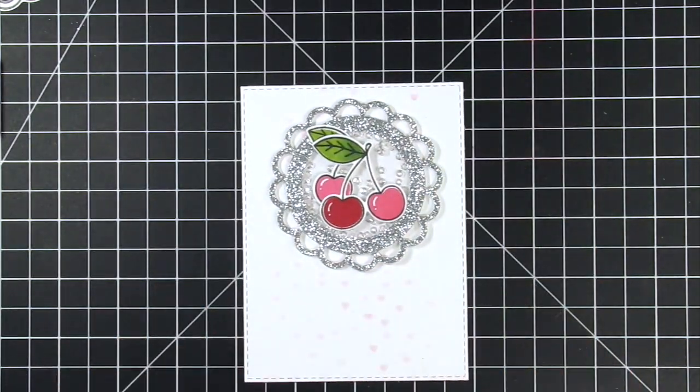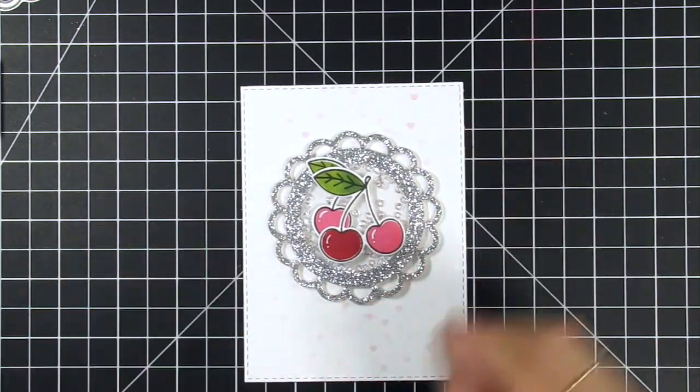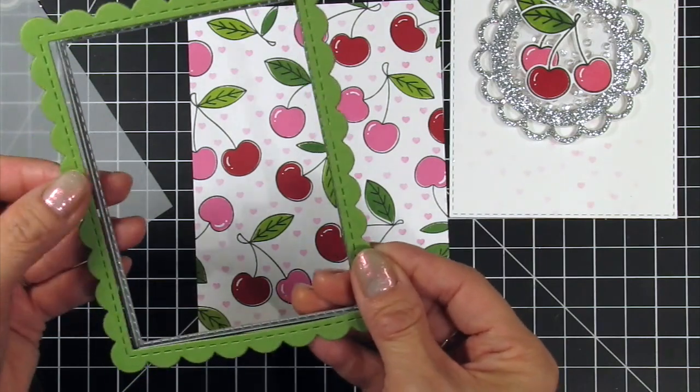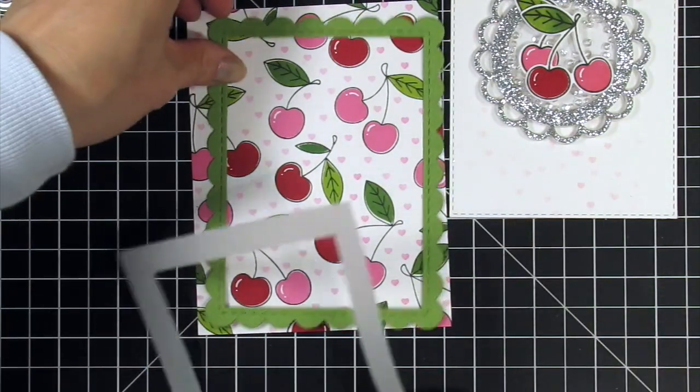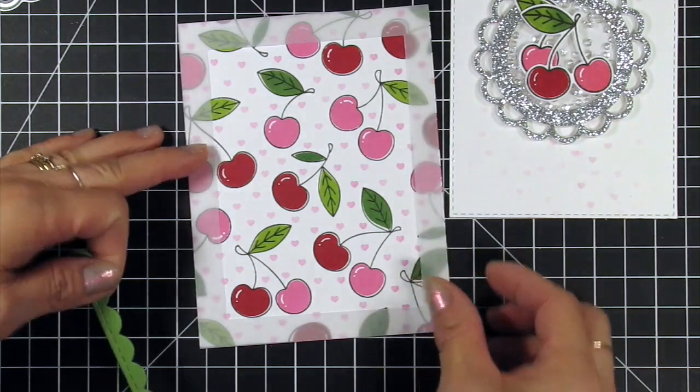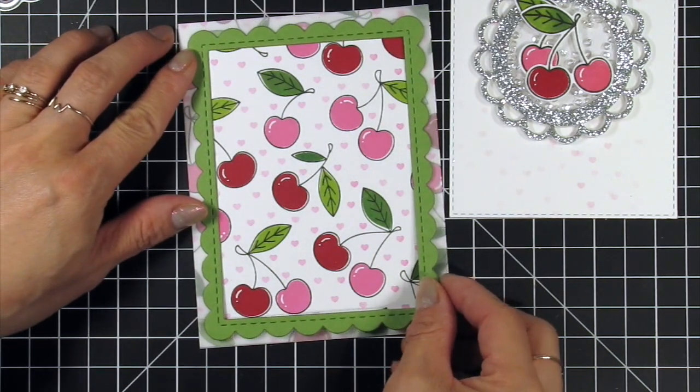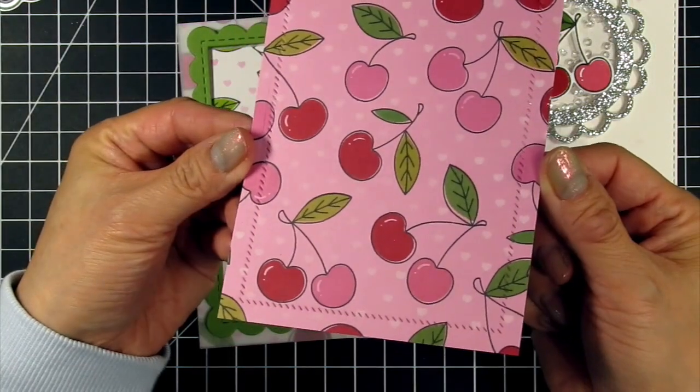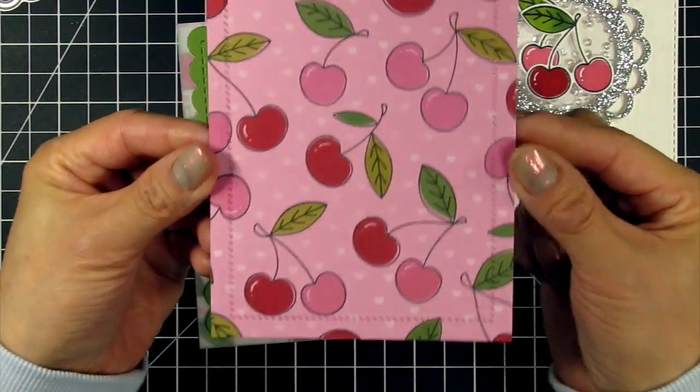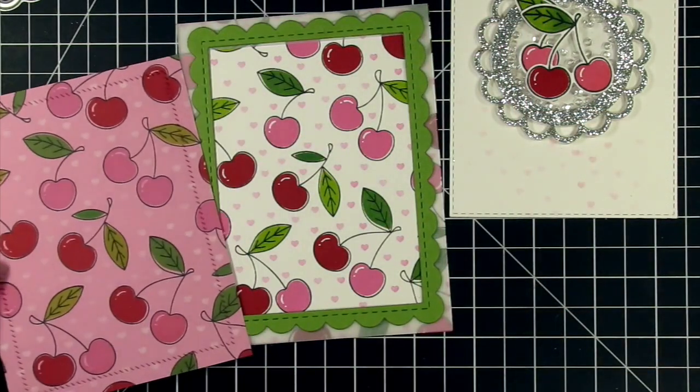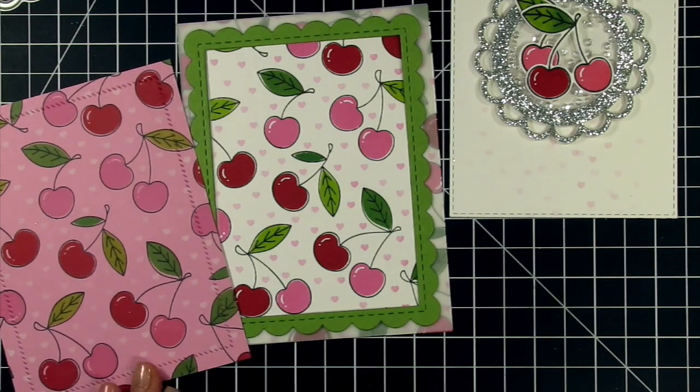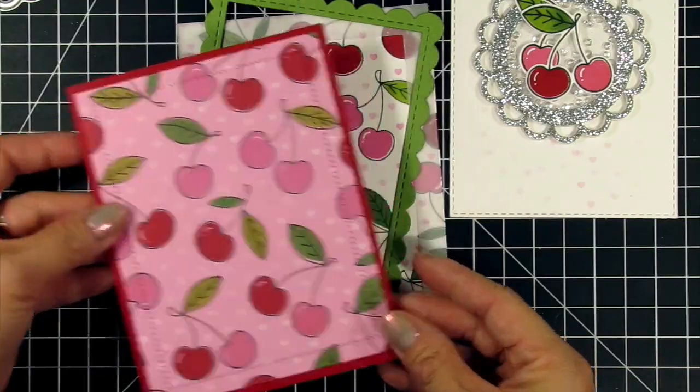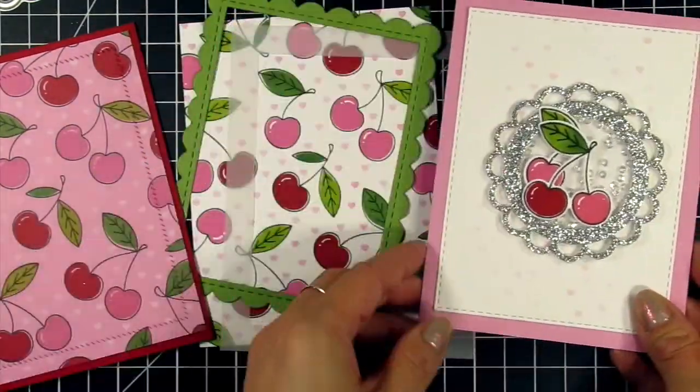I've die cut the bokeh hearts background using the largest of the stitched rectangle stacklets. For the sugar cube background I've die cut the largest of the frame and frame two dies from Peapod cardstock. I want to mute the background on the outside of this frame so I use the same stitched rectangle stacklet to cut out the center of a vellum panel. For the strawberry milkshake panel I used the largest of the diagonal stitched rectangle stacklets to add a border. This panel is so beautiful and bold that it doesn't need much more than that. I trim a quarter inch off this panel and adhere it to a cherry pop card base. Then I'll add the bokeh panel to a strawberry milkshake card base.